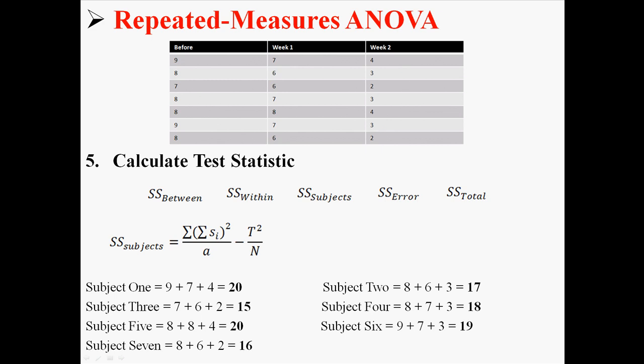We're finding the sums for each of the seven subjects. We have 20, 17, 15, 18, 20, 19, and 16. So the top part of that equation is we're going to square each of those values and then add them together. And then the rest is stuff we already know. We already know that t is 125, we know that a is 3, and we know that capital N is 21. So now that we know all those things, we can solve for sum of squares subjects, which in this case is 7.62.